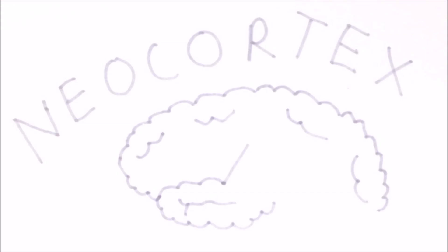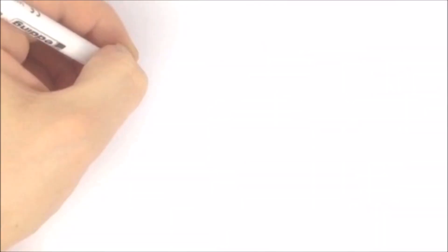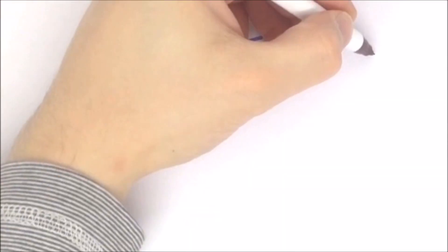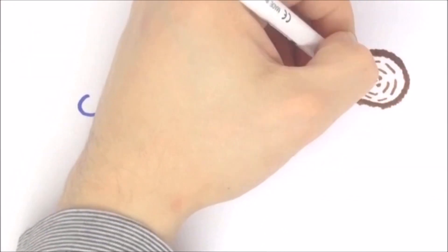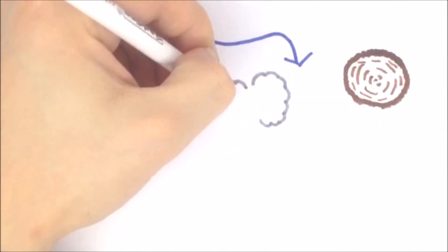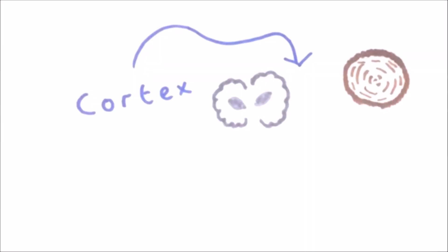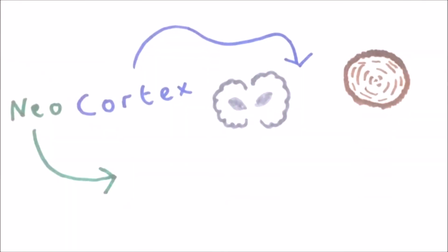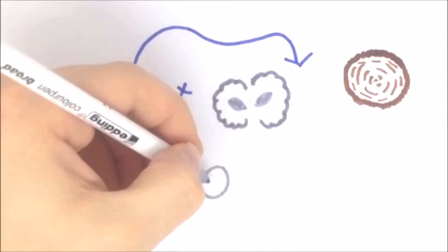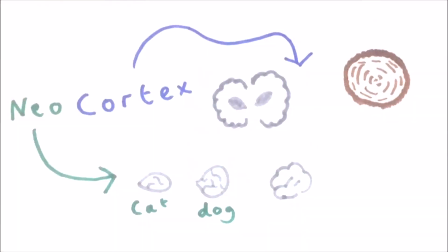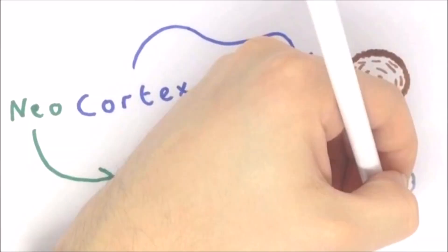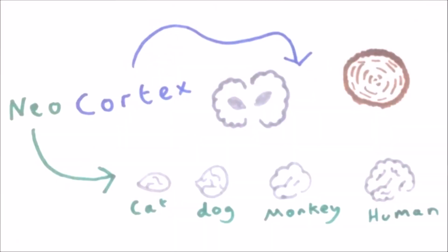The neocortex is the wrinkled outer layer of the brain. The word 'cortex' comes from the Latin for bark, as the cortex wraps around the brain like bark wraps around the trunk of a tree. 'Neo' means new, as the neocortex is the part of the brain to grow and develop most recently in evolution.